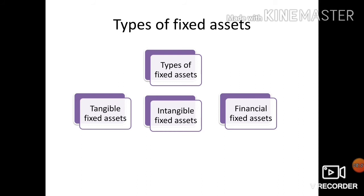Intangible fixed assets: these fixed assets do not have a physical existence — they cannot be seen or touched — but they are very valuable to the business. Examples include goodwill, brand names, trademarks, patents, copyrights, and so on. With these, the company may acquire some rights over their brand, trademarks, products and services, as well as their brand ambassadors. These assets carry an intangible fixed value towards the business.